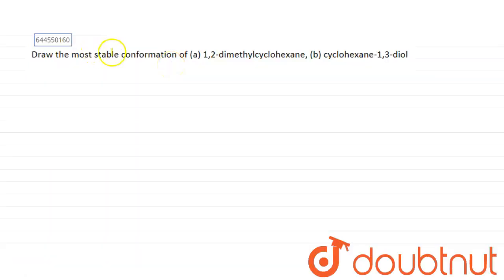have asked to draw the most stable conformation of 1,2-dimethylcyclohexane and cyclohexane-1,3-diol. So before that we should know cyclohexane is primarily in this structure but the most stable form is chair form and we draw it like this.